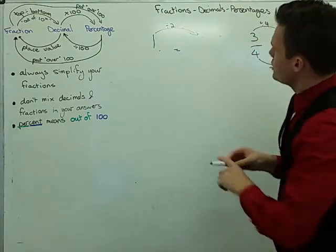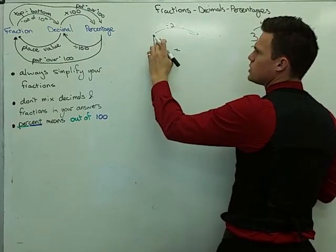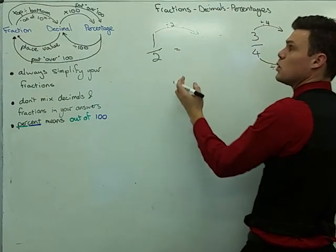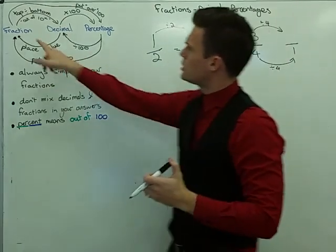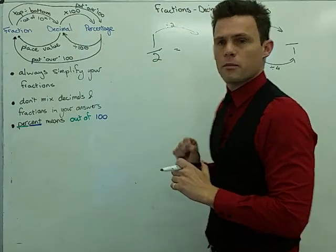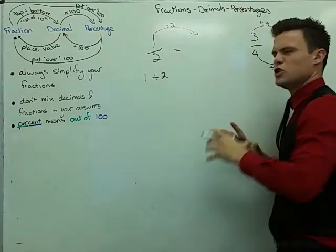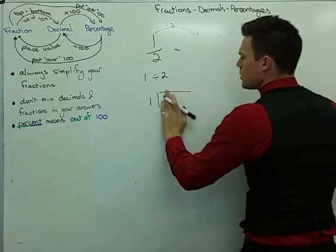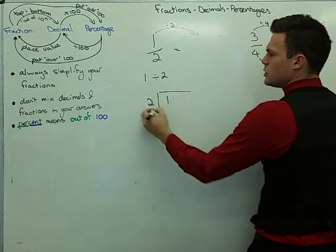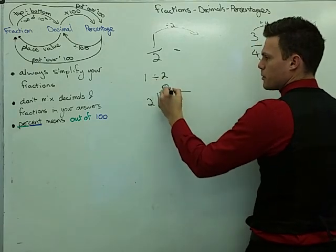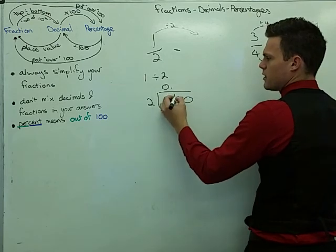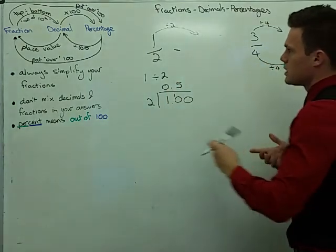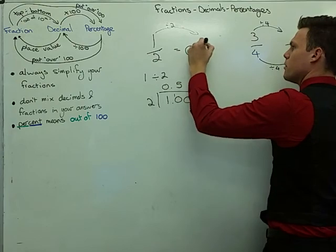So it doesn't really matter what happens at the bottom, because I end up getting rid of it. But what I do need to know is that in order to convert one half into a decimal, I have to do the number at the top divided by the number at the bottom. A very quick rule to get from a fraction to a decimal is divide the top by the bottom. So in this case, I'm going to have one divided by two. Using the bus stop method: one divided by two — two doesn't go into one, so we get zero. I put in my decimal and some zeros, carry the one, that's 10. Two into 10 goes five times. So I know that one half is the same as 0.5.